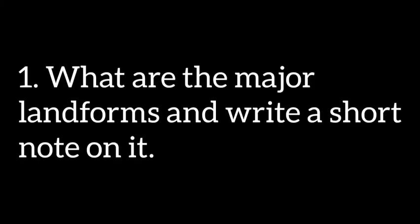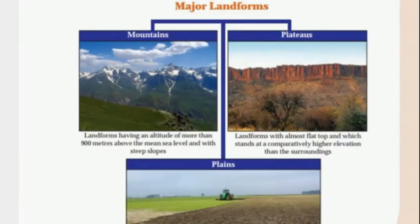The first question: What are the major landforms? Write a short note on it. We are going to talk about mountains. Landforms having an altitude of more than 900 meters above the mean sea level and with steep slopes are called mountains.